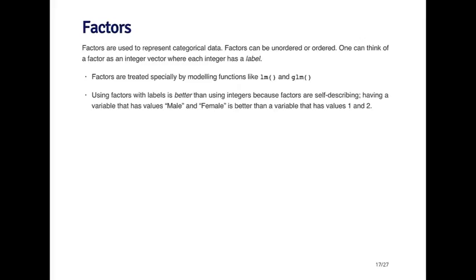In many data sets, you'll find a variable coded as one and two, and it's not easy to know whether that variable is truly numeric or whether it's representing something like gender where ones are males and twos are females. That's not coded in the data set, so it's hard to tell. If you use a factor variable, the coding for the labels is built into the variable and it's much easier to understand.